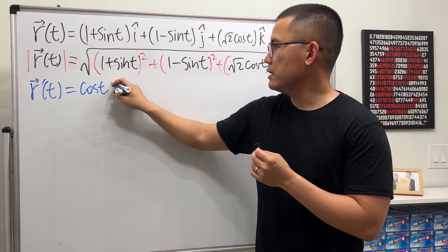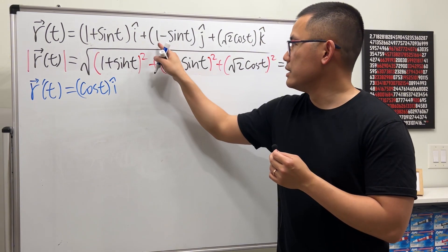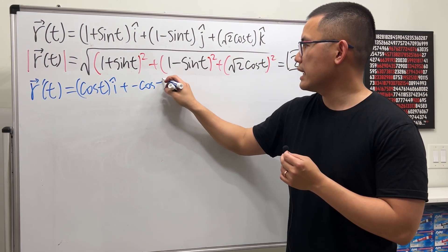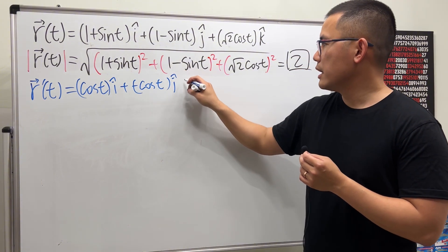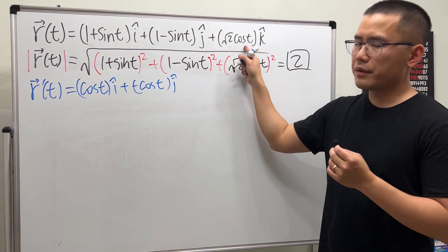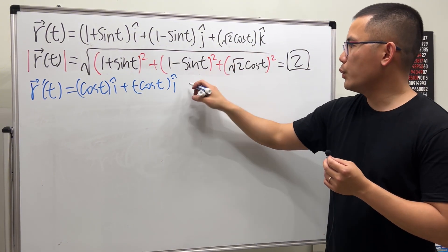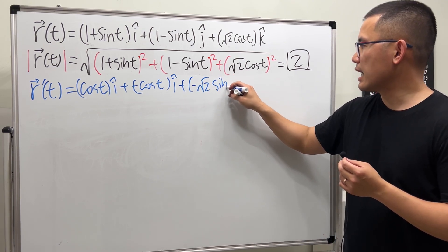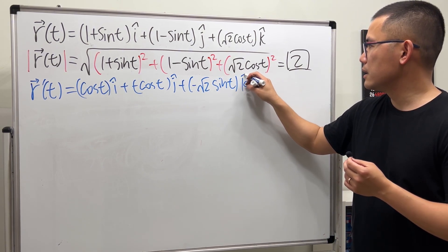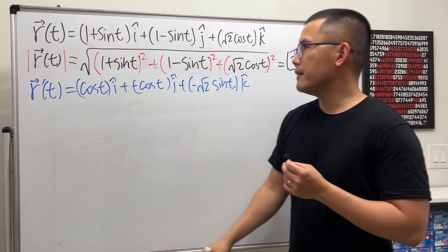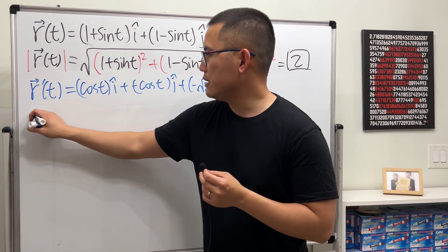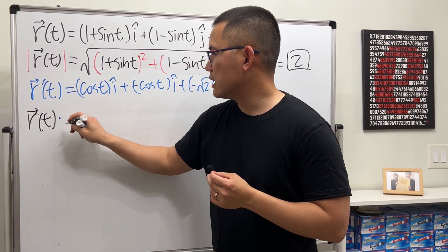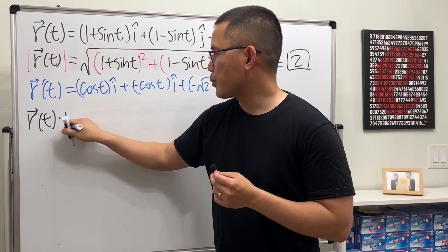Now let's get the derivative: r'(t) = cos t·i + (-cos t)·j + (-√2·sin t)·k.